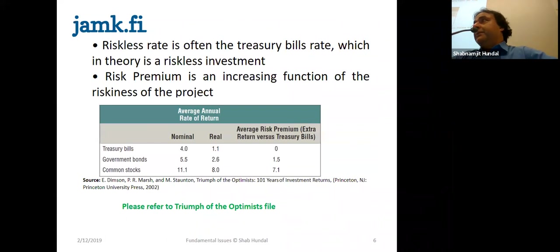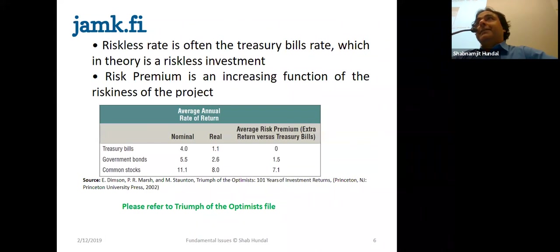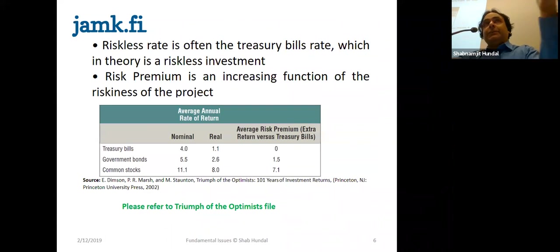So the riskiness of the company's projects depends upon several reasons. One important reason to bear in mind is the capital structure. You know what capital structure is. The capital structure includes debt and equity. Debt and equity is called capital. By capital, it means financing of the firm. And the most common ways to finance the company are debt and equity.